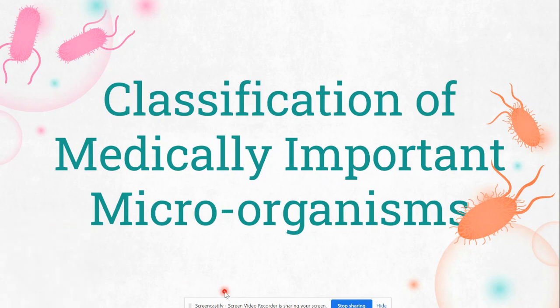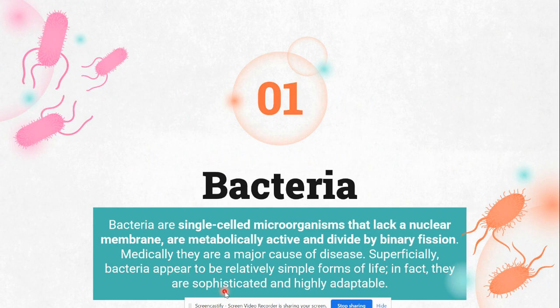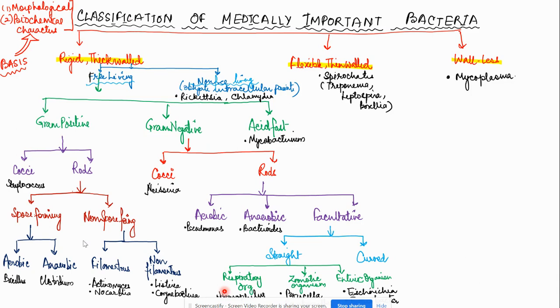Classification of medically important microorganisms: the major categories are bacteria, fungi, viruses, and protozoa. Bacteria are single-cell microorganisms that lack the nuclear membrane. They are metabolically active and divide by binary fission, making them major causes of diseases. Although bacteria appear to be a relatively simple form of life, they are very sophisticated and highly adaptable. On the basis of morphological and biochemical characteristics, medically important bacteria are classified into three groups.